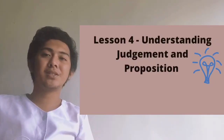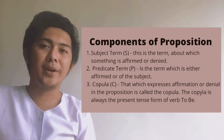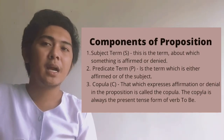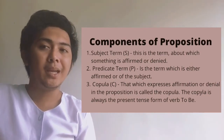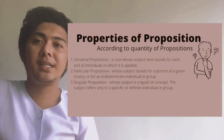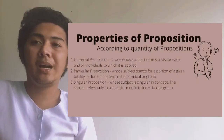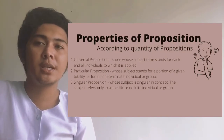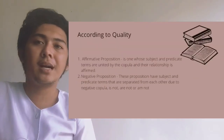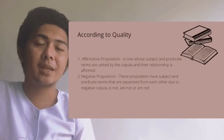Let's come now to Lesson 4: understanding judgment and proposition. Here are the components of a proposition: the subject term (S), the predicate term (P), and the copula (C). For the properties of propositions — according to quantity, we have universal, particular, and singular propositions. According to quality, we have affirmative and negative propositions.